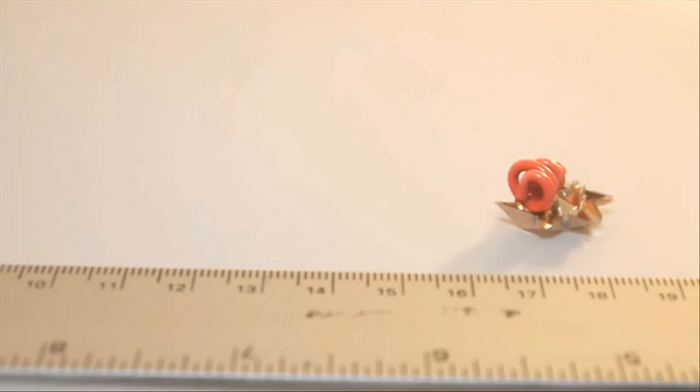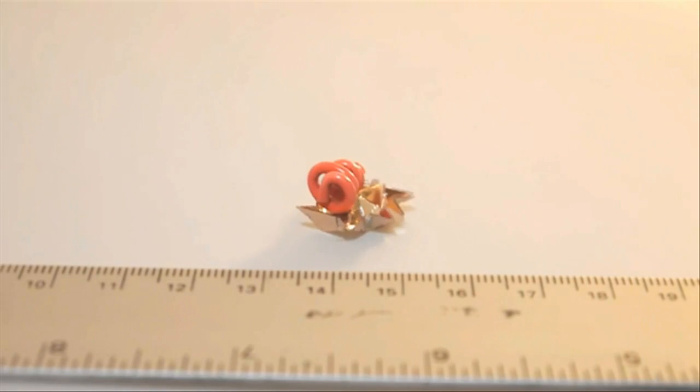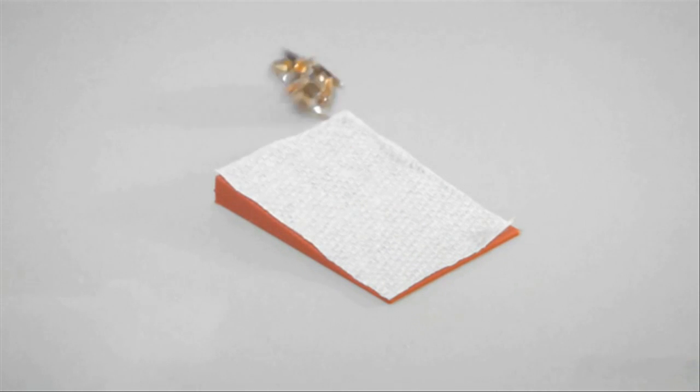Other than the self-folding plastic sheet, the robot's only component is a permanent magnet affixed to its back. Its motions are controlled by external magnetic fields.